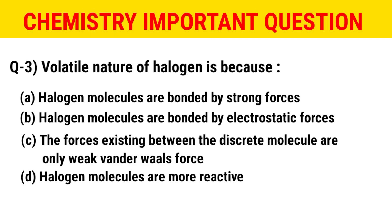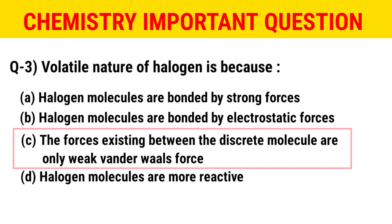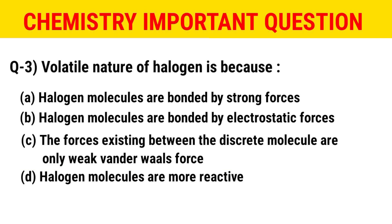The next question: the volatile nature of halogens is because of which reason? The options are: halogen molecules are bonded by strong forces; halogen molecules are bonded by electrostatic forces; the forces existing between the discrete molecules are only weak Van der Waals forces; or halogen molecules are more reactive. The correct option is C — the forces existing between the discrete molecules are only weak Van der Waals forces.